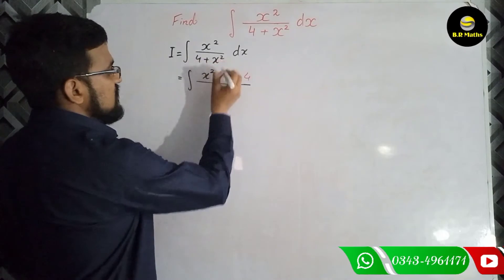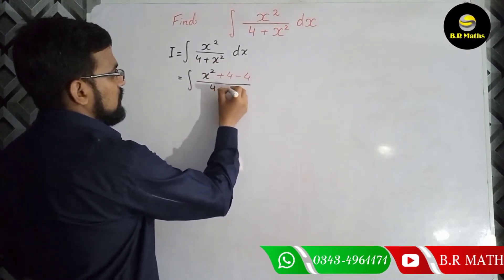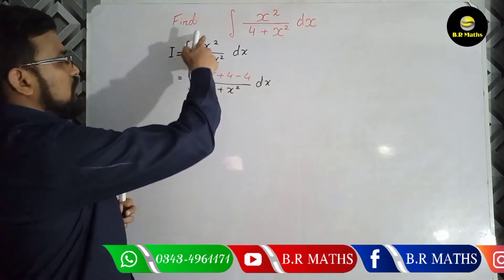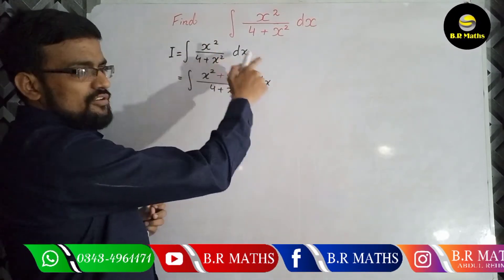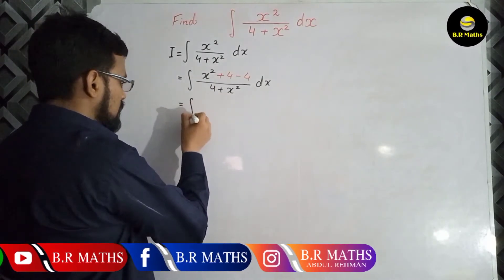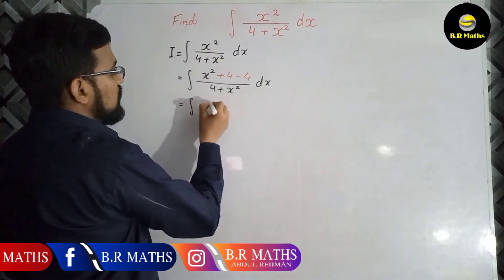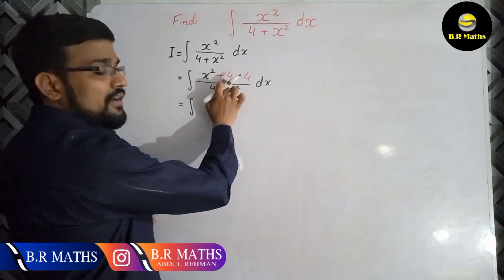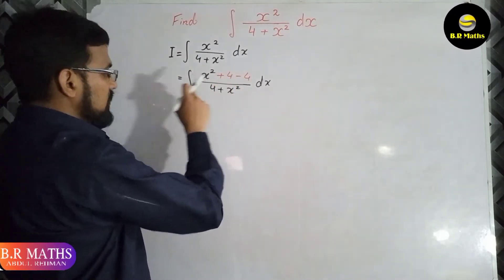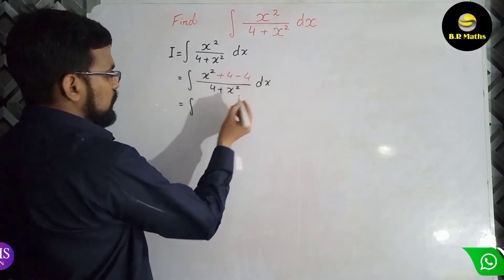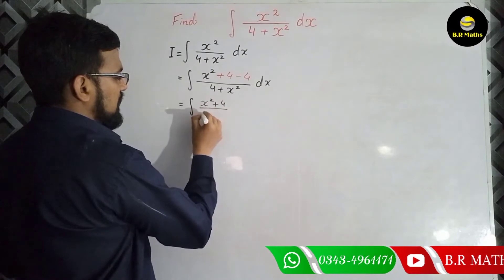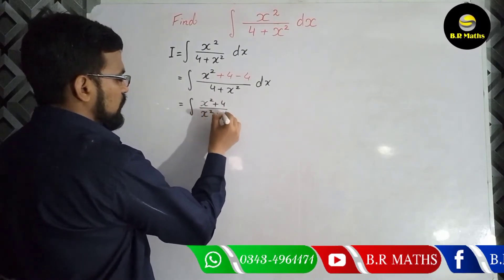For cancellation, otherwise you cannot change into different fractions. If single term in numerator, I can plus and minus, okay? Plus 4 minus 4. Now separate this one: x square plus 4 divided by x square plus 4.